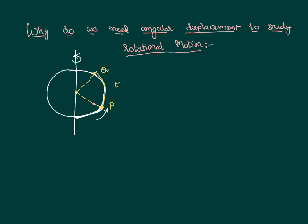What is the displacement of that second point? Notice that these two points are having different displacements. Consider yet another pair of points — they too have different displacements. Each particle of the body in a given time is having a different displacement. This particle has displacement x, this one has displacement y, and this one has displacement z.